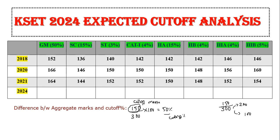The PDF contains both cutoff marks and cutoff percentage. This cutoff is based on many criteria — that is the number of candidates who appear, and the paper level. If the paper is difficult or easy, the cutoff will vary from year to year based on that.